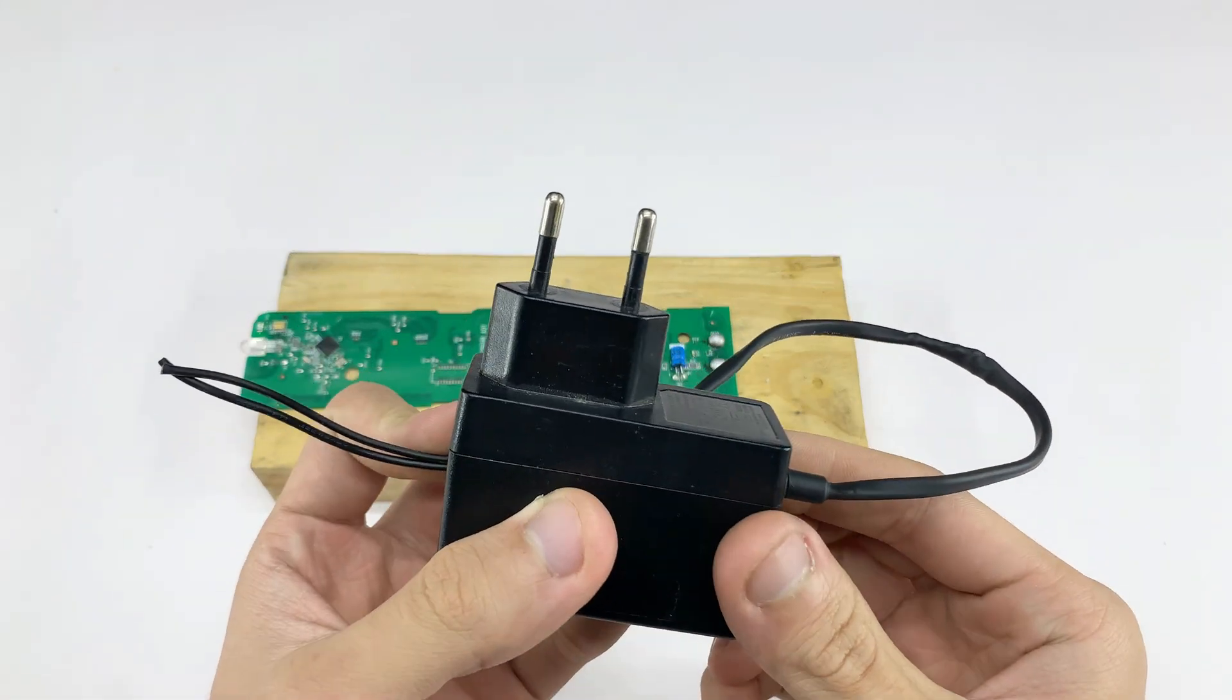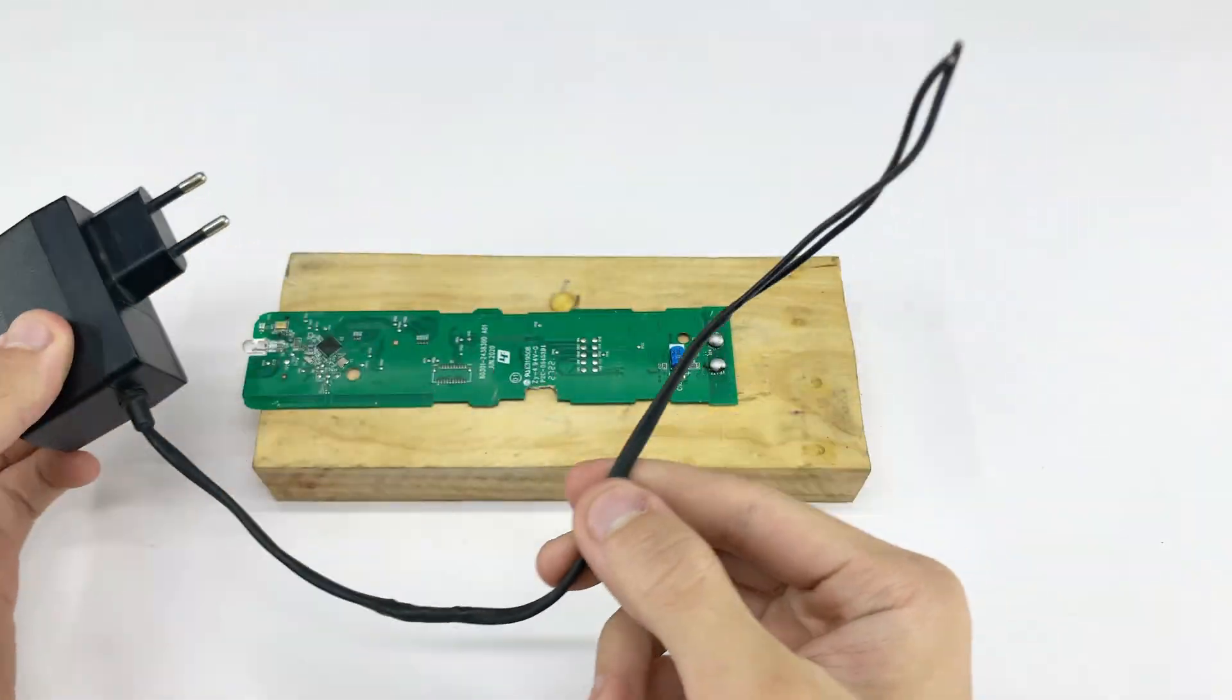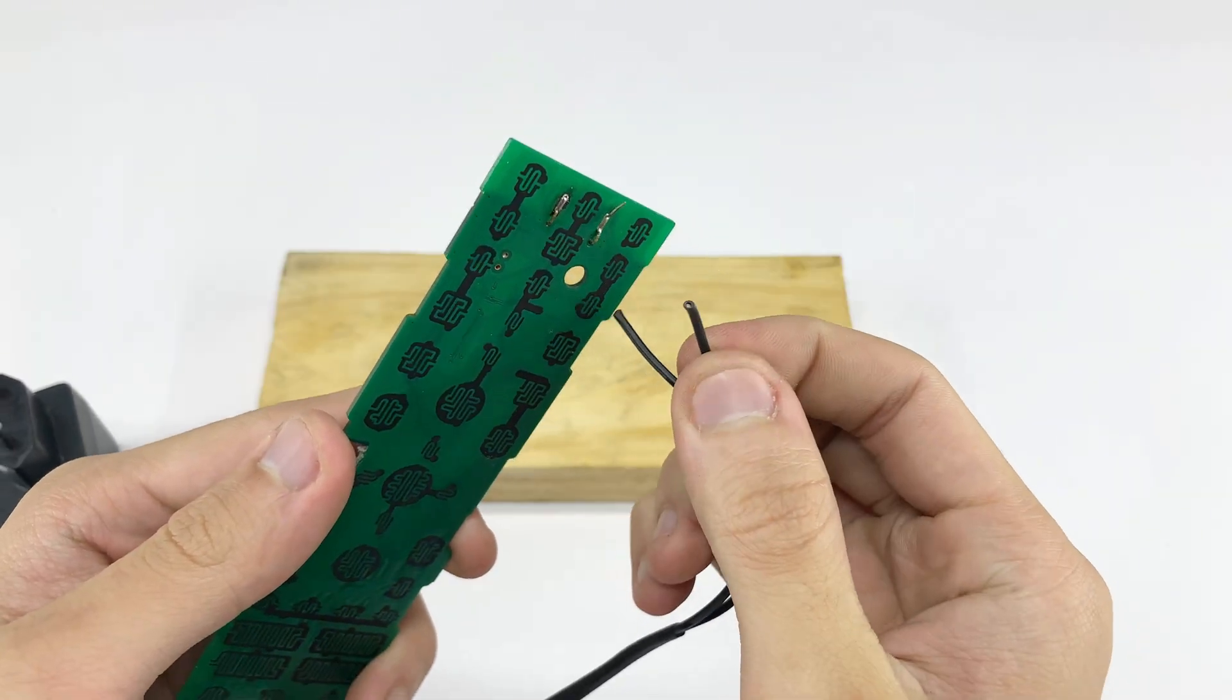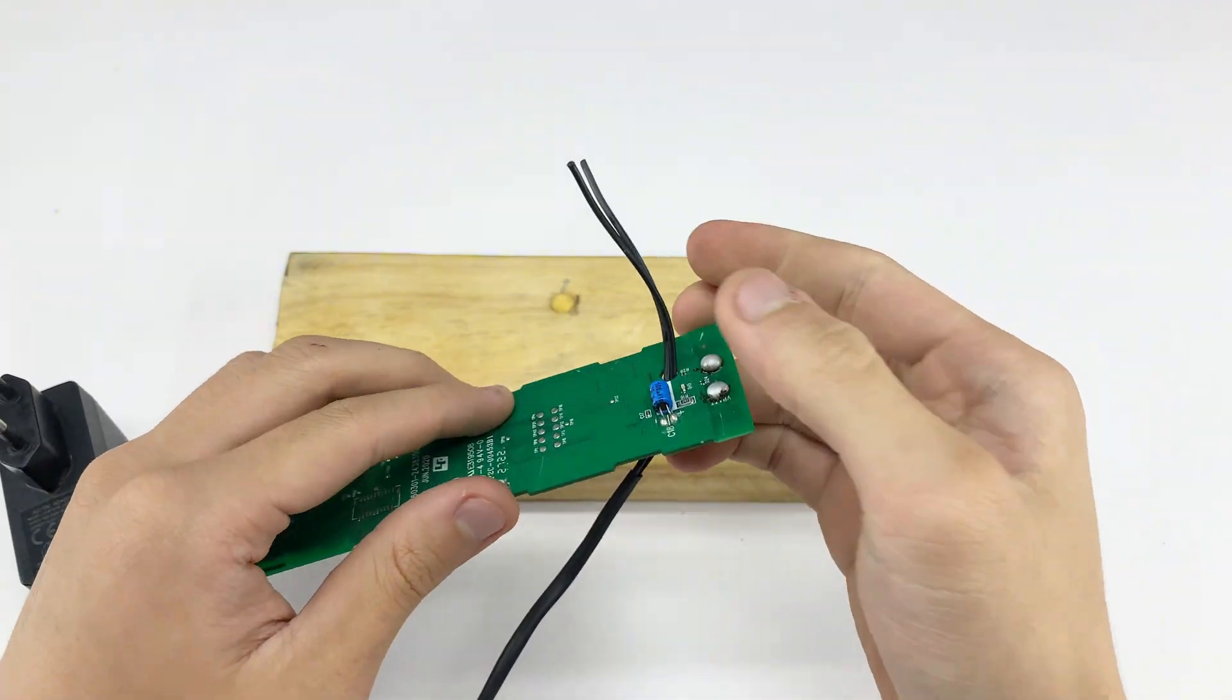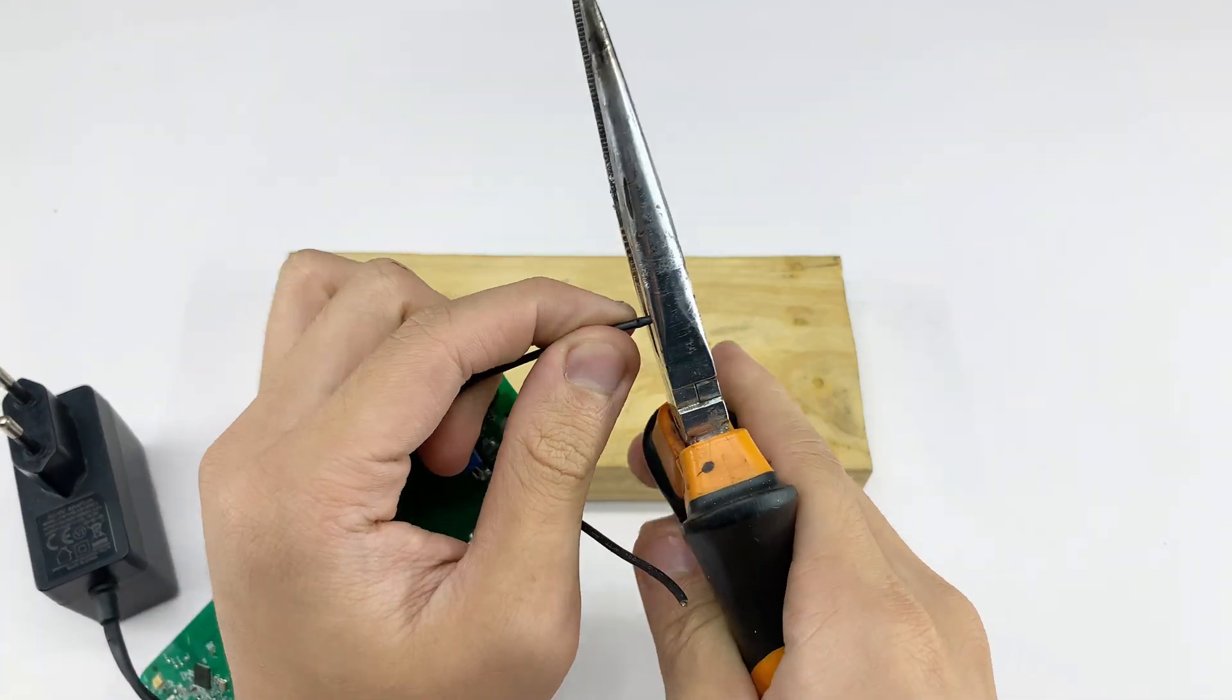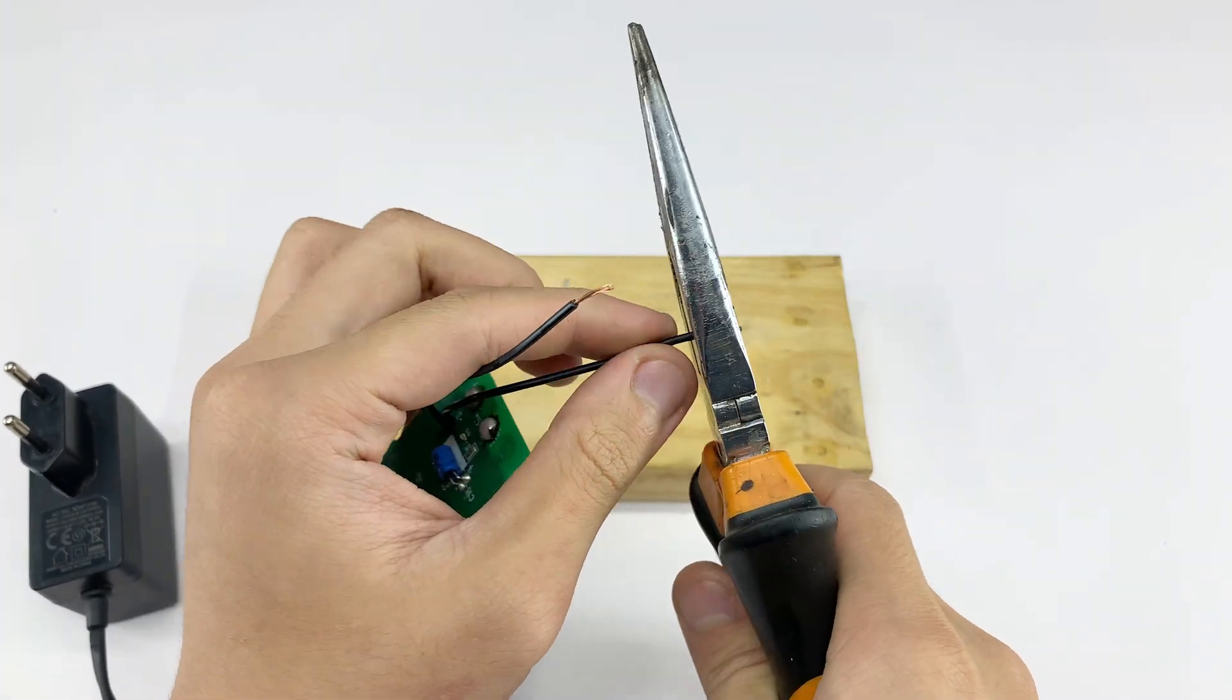Now, I'm taking a standard power adapter. I'll strip a small section of insulation from its wires to expose the copper. These wires will provide the necessary power to our new antenna.